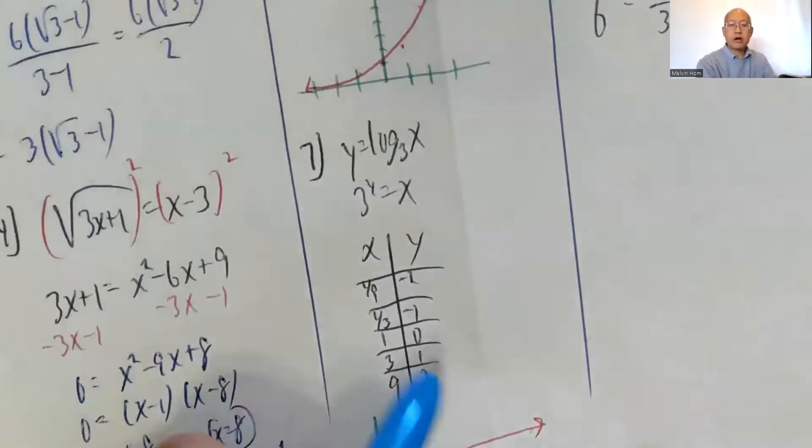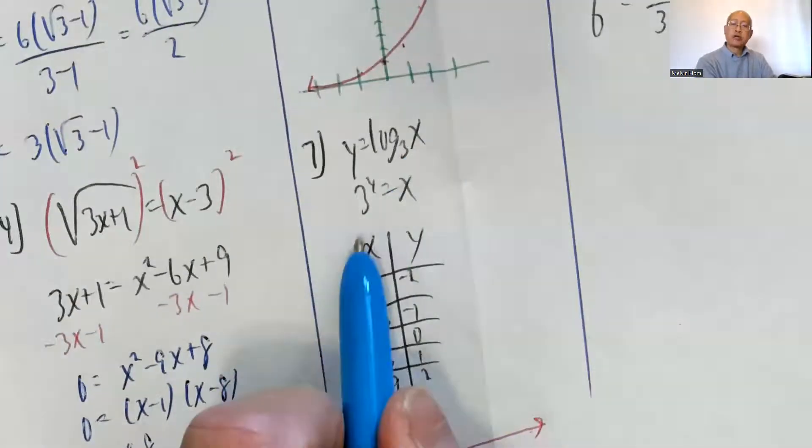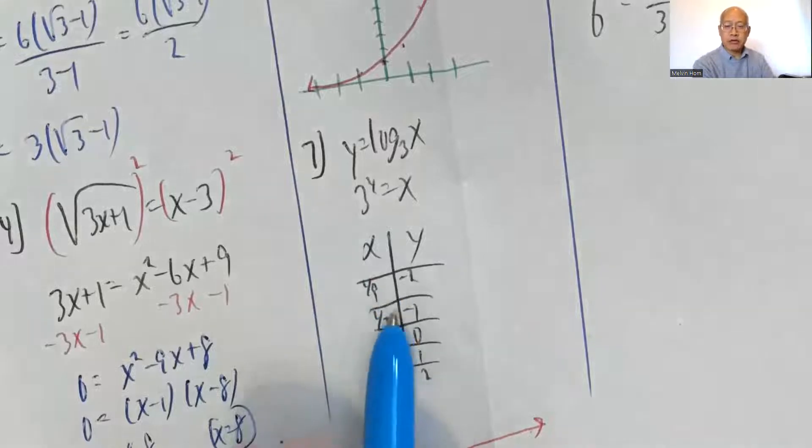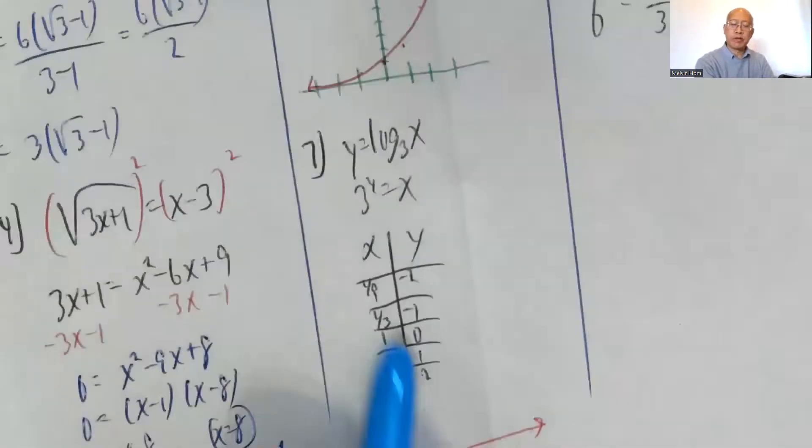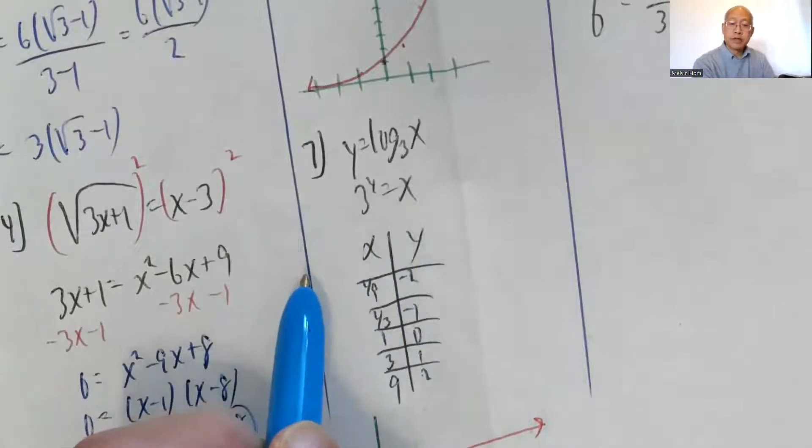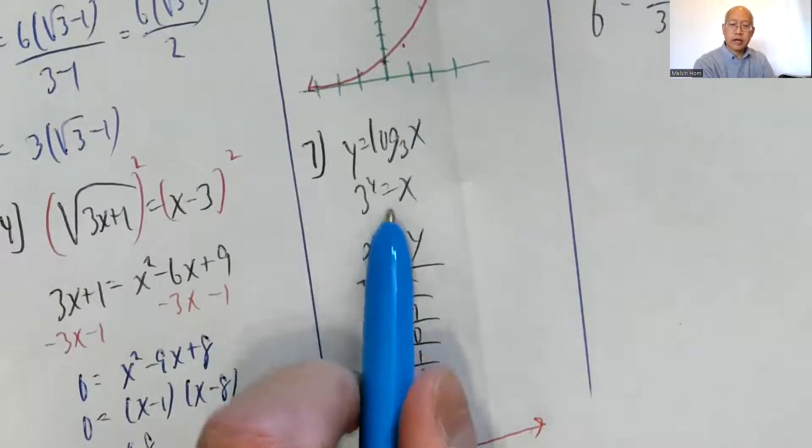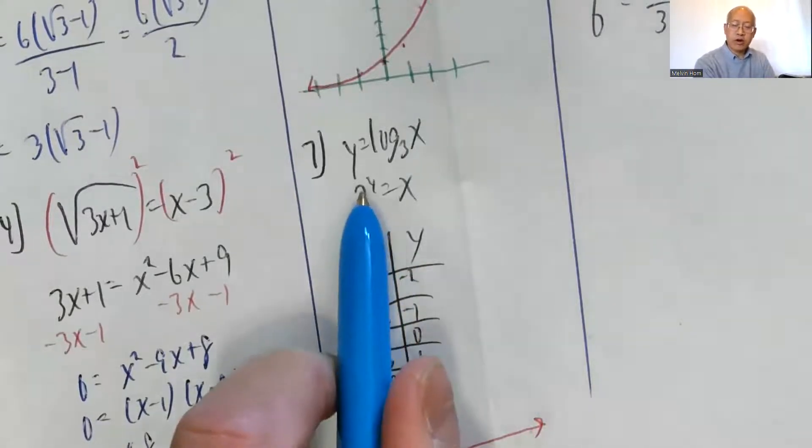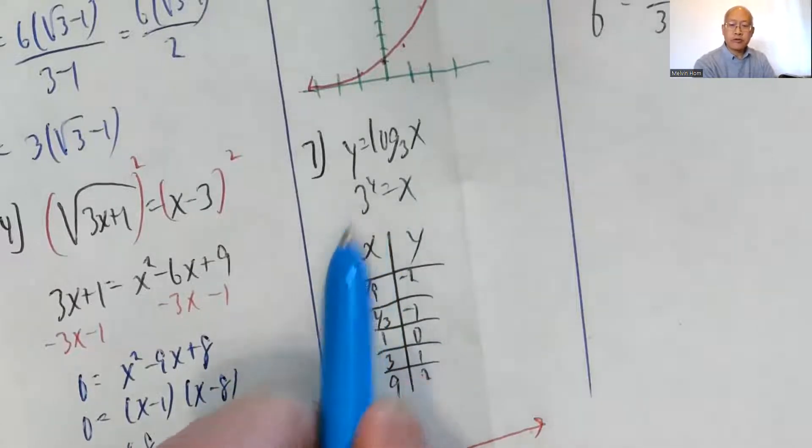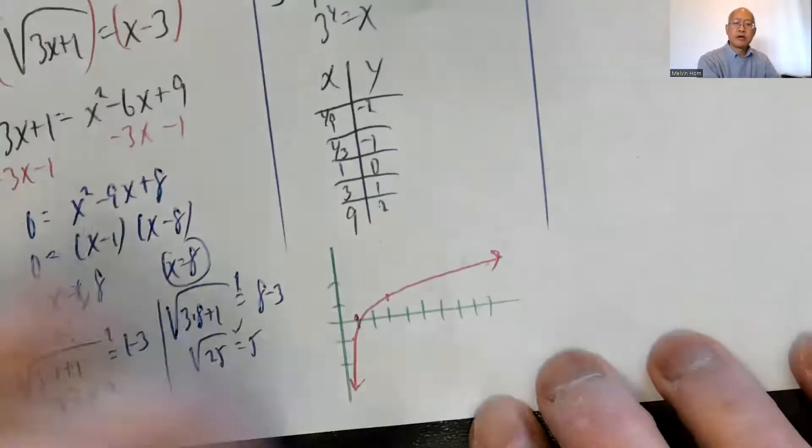Number 7: y equals log base 3 of x. Unscramble that, write it as 3 to the y equals x. So I pick appropriate values of y. I let y be negative 2, negative 1, 0, 1, 2. And then I plug in to find x. If I plug in 0 for y, I get 1. Plug in 1, I get 3. Plug in 2, I get 9. Plug in negative 1, 3 to the negative 1 is 1 third. And plug in negative 2 for y, 3 to the negative 2, that's 1 over 3 squared or 1 ninth.